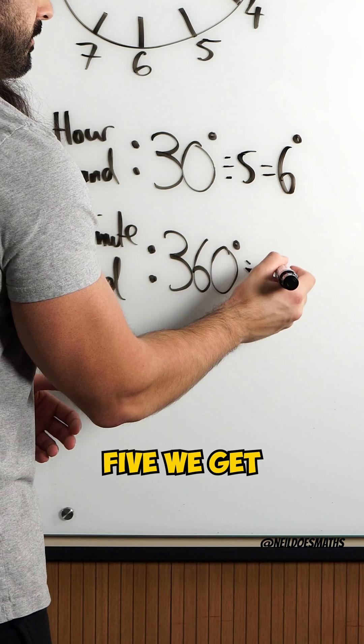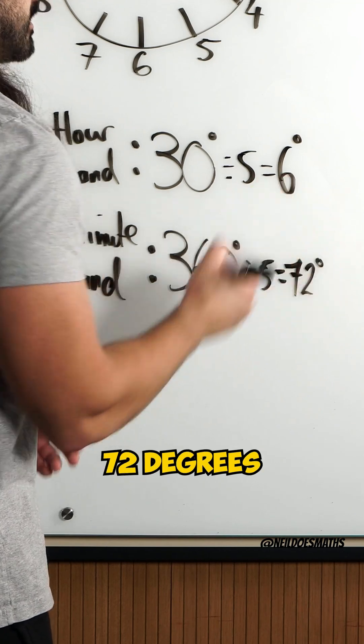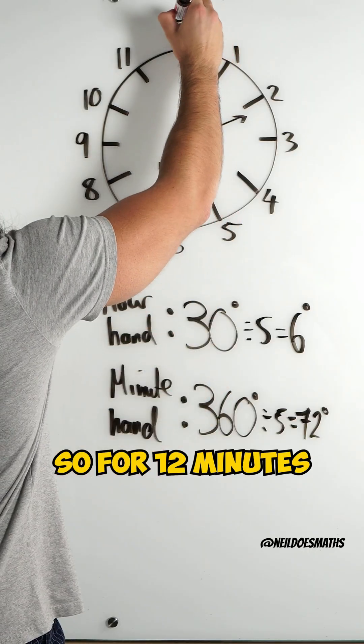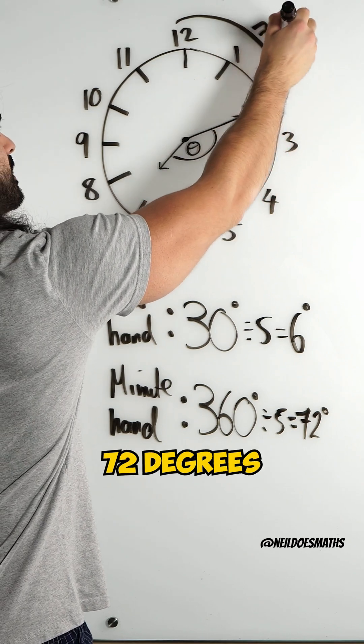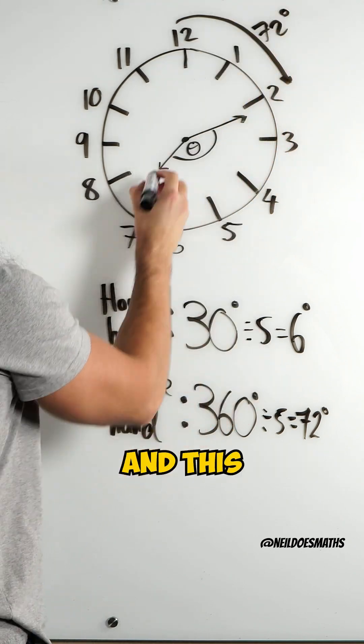Dividing this by 5, we get 72 degrees. So, for 12 minutes, we are rotating 72 degrees for the minute hand and this hour.